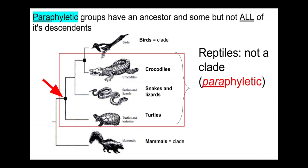Reptiles are not a clade — they're not monophyletic, they are paraphyletic — because reptiles includes crocodiles, snakes, lizards, and turtles, but it excludes birds and avian dinosaurs, even though our most refined methods have long revealed that birds are dinosaurs and are closely related to crocodiles. These sister group relationships are ignored, and instead animals are grouped as reptiles based on superficial similarities.